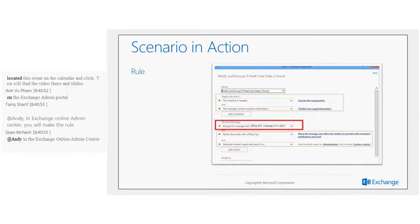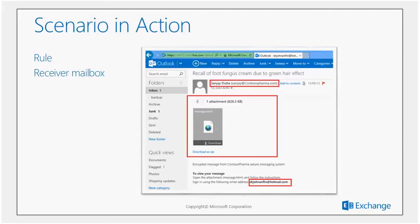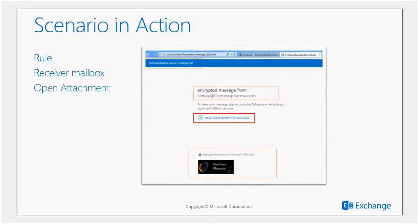If Sanjay drafts a message containing a patient record — whether in an attachment or the message body — and sends it out, John, who has a Hotmail account, will receive the message in his inbox. The message contains instructions at the bottom saying to open the attachment and follow the instructions. The encrypted message is included as part of that attachment and sits in the recipient's inbox — it is not stored on the Exchange server.